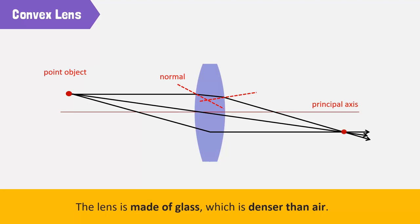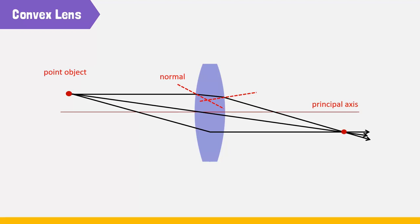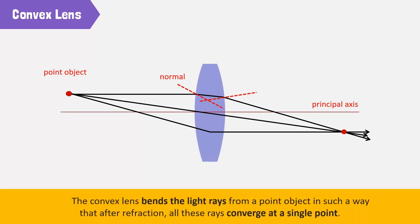This is one of the patterns that we were talking about. The convex lens bends the light rays from a point object in such a way that after refraction, all these rays converge at a single point. We also call it a converging lens.